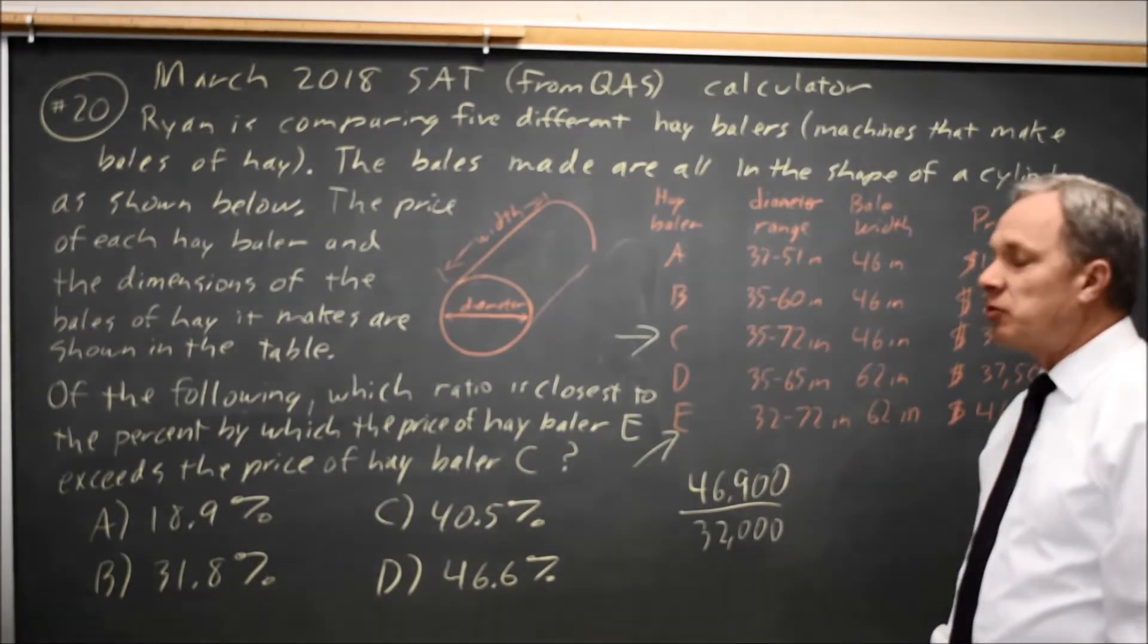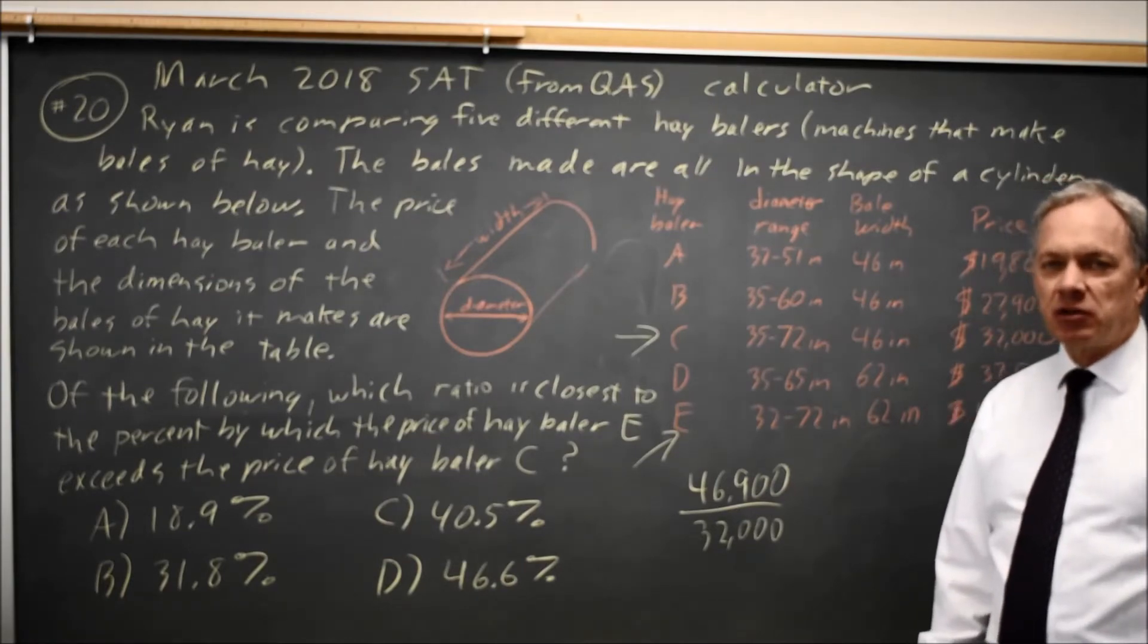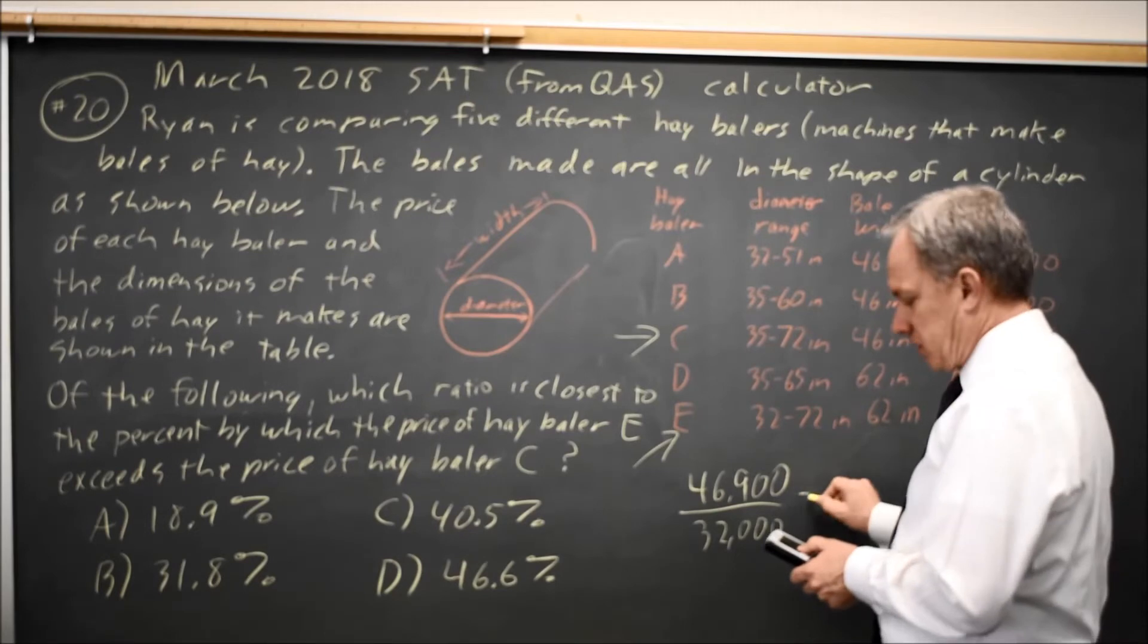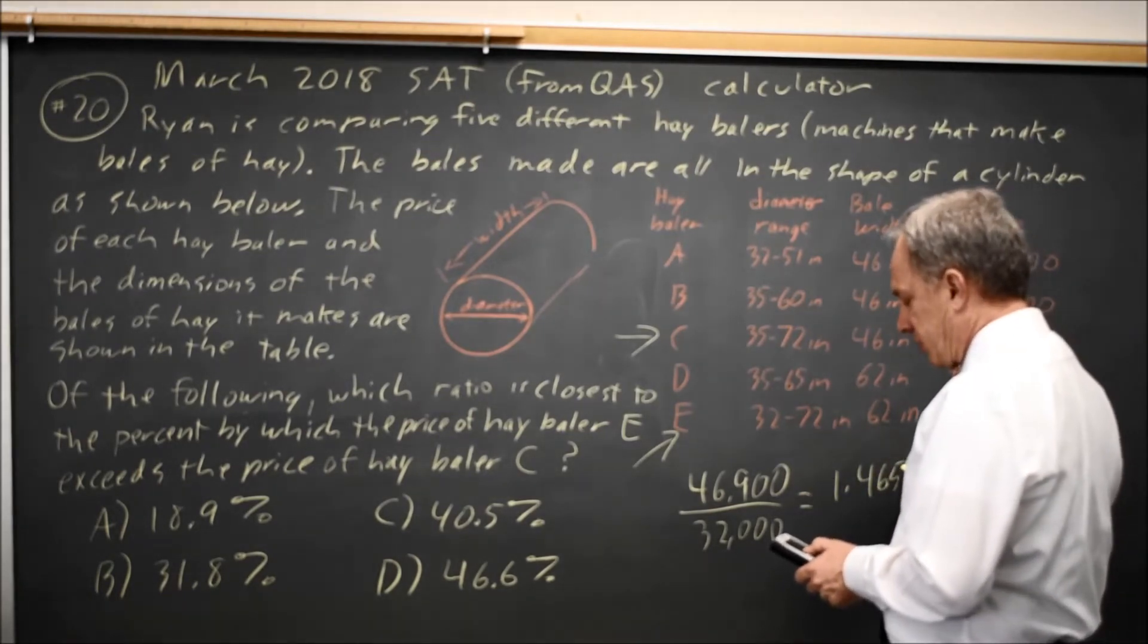So when we take this ratio we'll get a fraction slightly over 1, and on my calculator that is 1.4656.